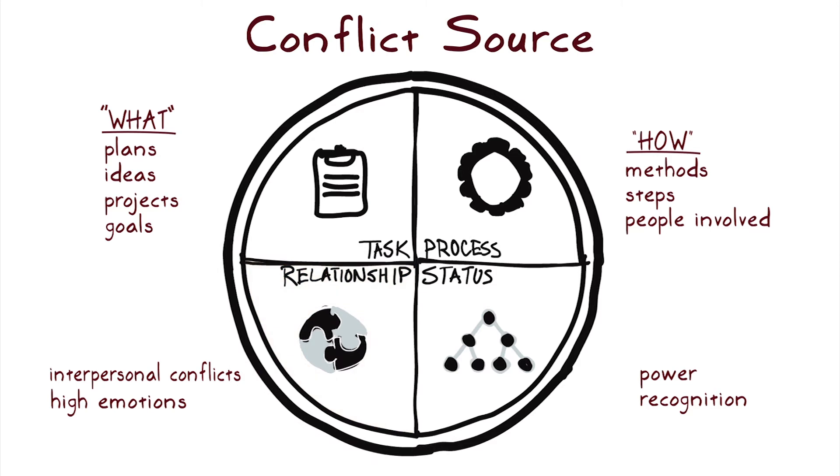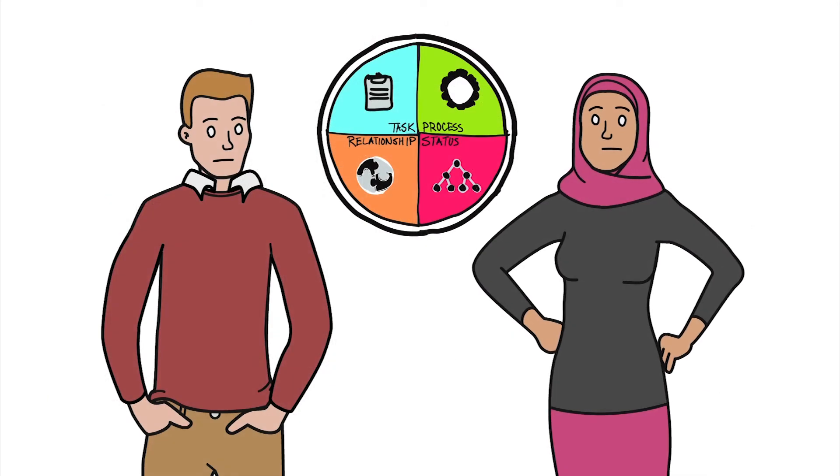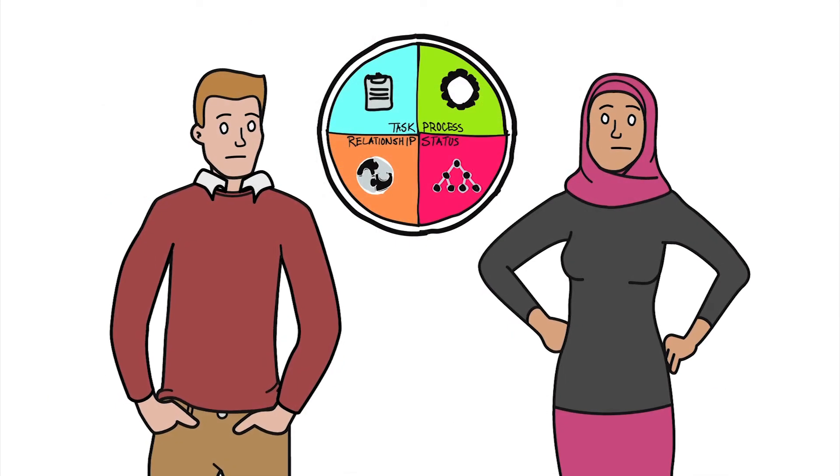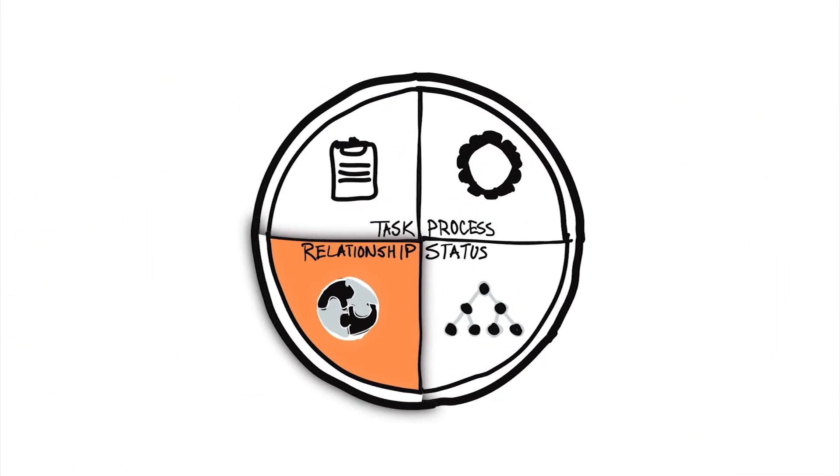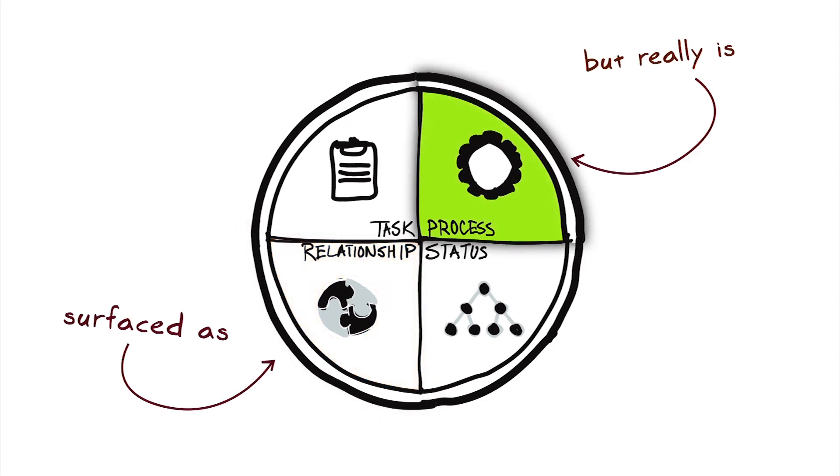Let's look at our example more closely. Jake and Nala interrupt and undermine each other, which seems like a relationship conflict. But if Kate dug deeper, she would see that it all started with Jake becoming defensive when Nala criticized his idea for how to manage data. That's what this conflict is really about.